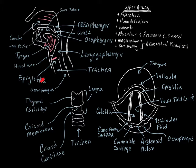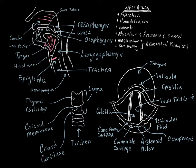Here we get a mid-sagittal section of the upper airway. We have the nare and the nasal cavity. The nasal cavity comes back, and you have these folds known as concha, which are important for filtration. They also increase the surface area of the nasal cavity so you can collect contaminants and warm and humidify the air as it comes through.